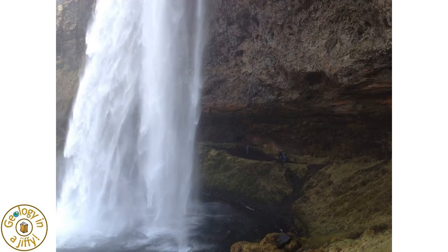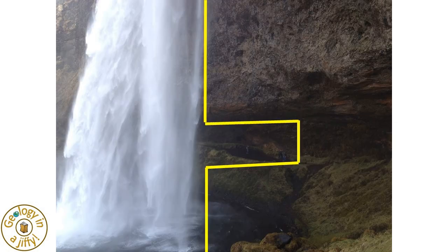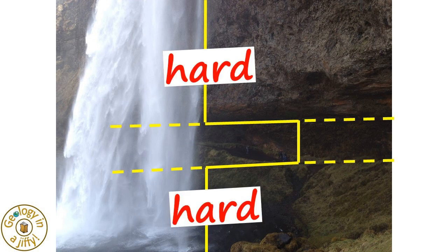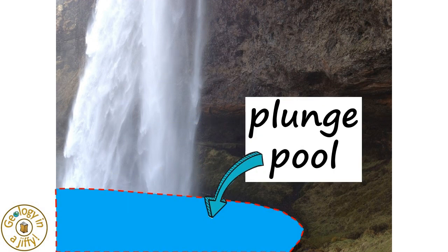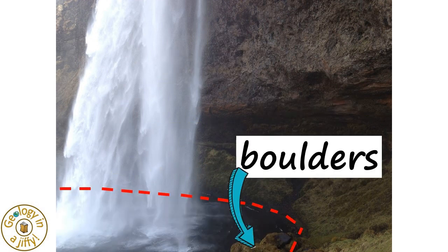This majestic waterfall is also in Iceland. We can see the amazing curtain of falling water and, if you look carefully, you can get an idea of the scale and power of the water by comparing its size with the people walking behind the water curtain. We can clearly see a softer layer of rock that has eroded more quickly than the two thicker, harder layers of rock that sandwich the softer layer. The plunge pool is very evident, as are the boulders made up of the harder overlying rock, these having toppled into the pool as the overlying layer collapses above the eroded softer layer of rock.